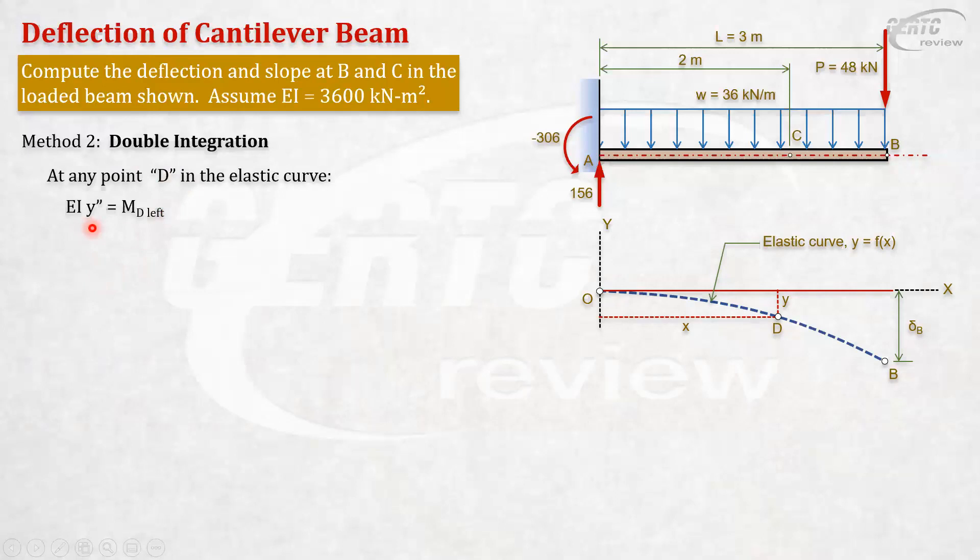The EI y double prime is the second derivative equals moment at d. Our main goal here, this is where students usually struggle, is getting the moment. We will get the moment as a function of the distance x. Take note, our origin is at o. We will get the moment as function of the distance. This is our point d. We will get the moment here.